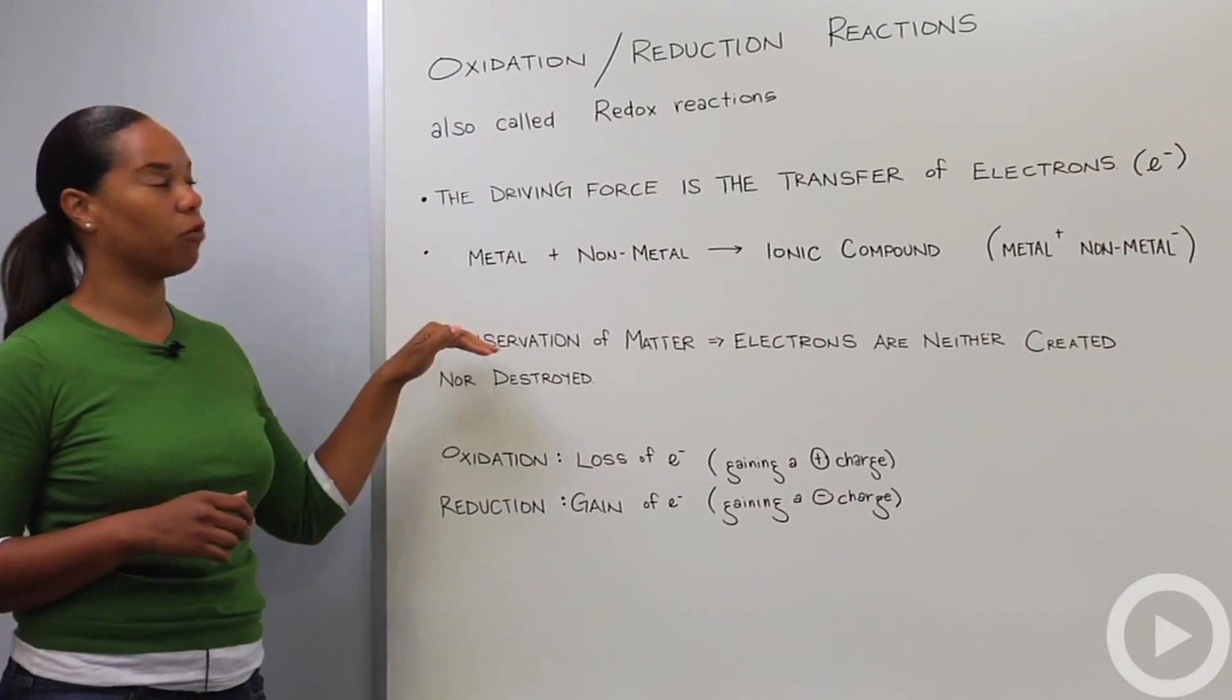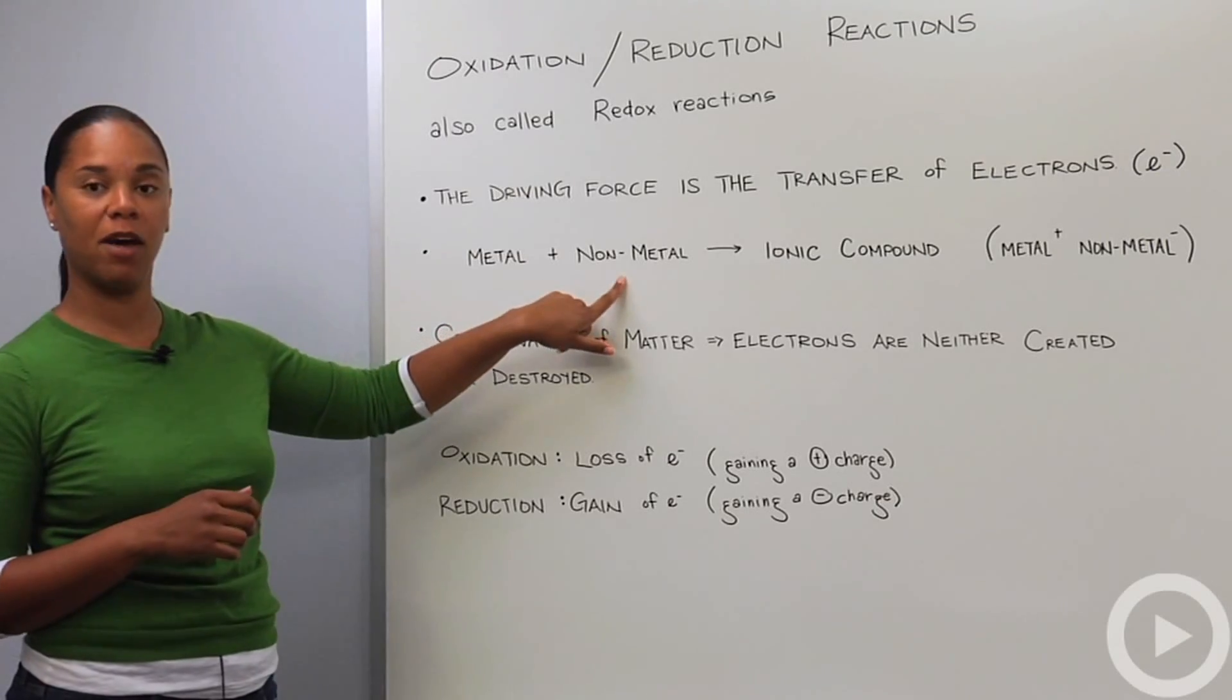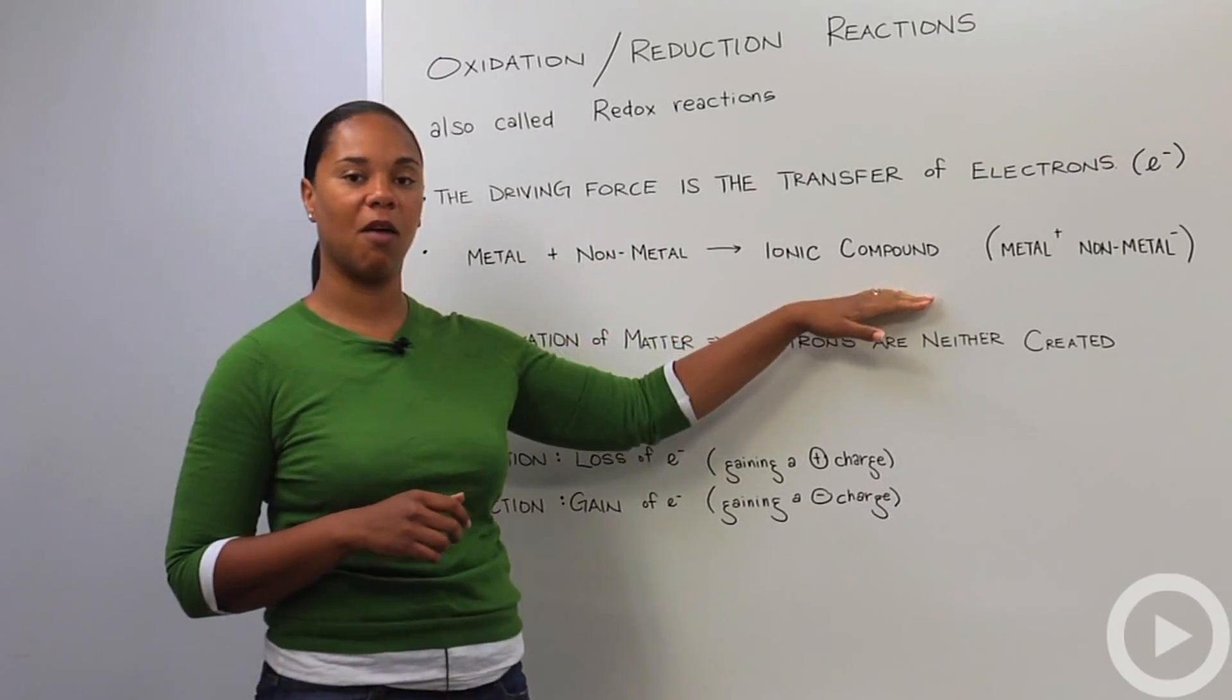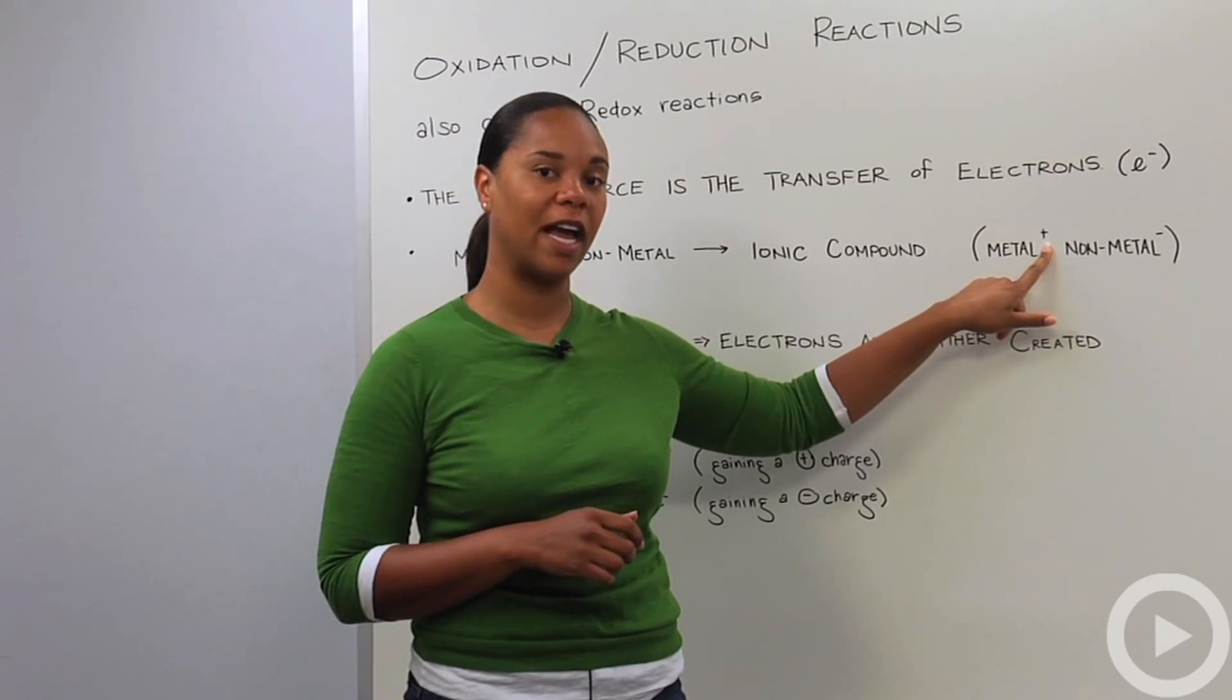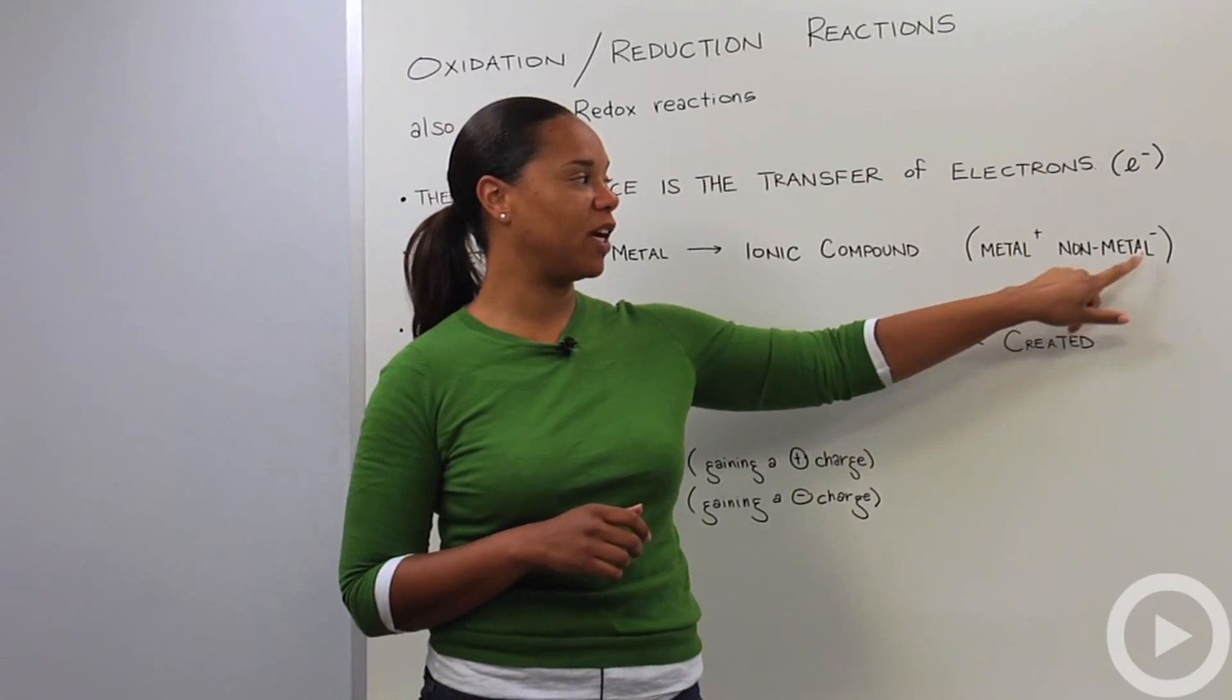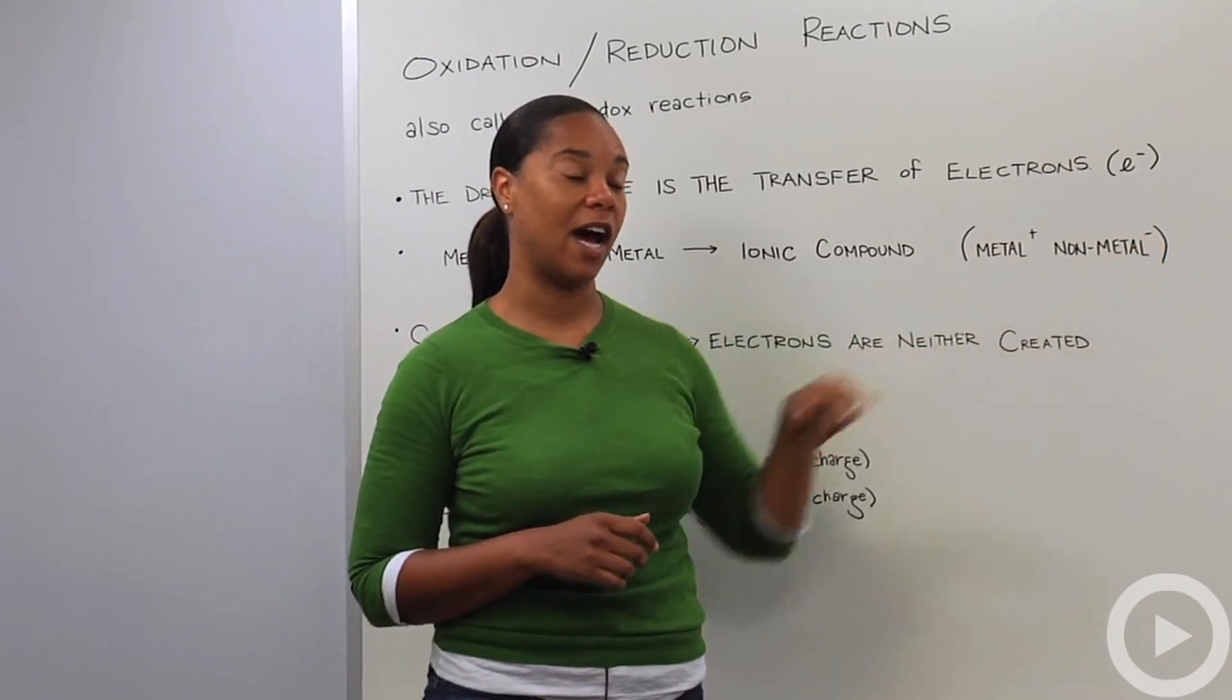So redox reactions usually occur between metals and nonmetals to form an ionic compound, in which the metal becomes a positively charged ion, or a cation, and the nonmetal becomes a negatively charged ion, or an anion.